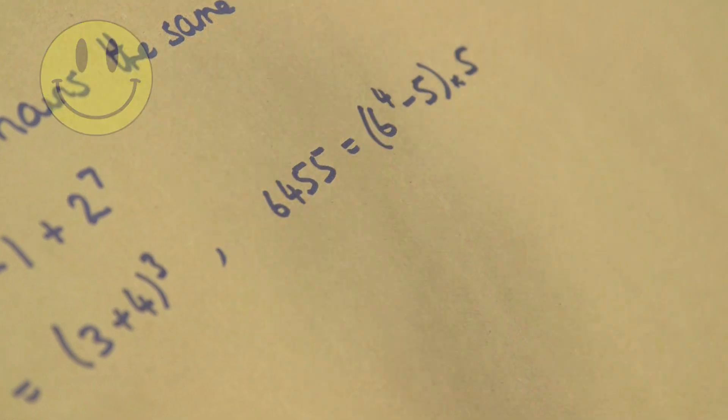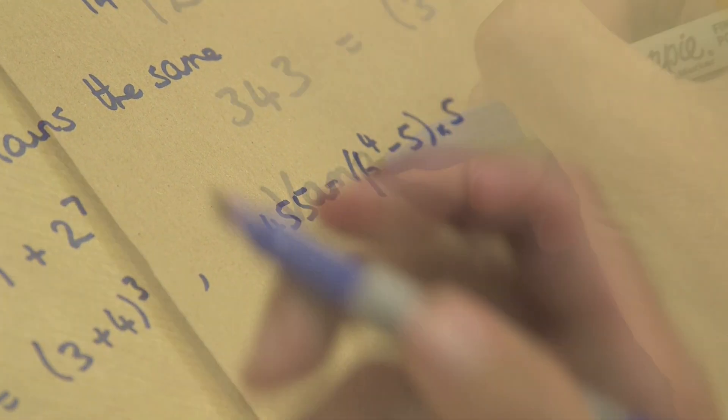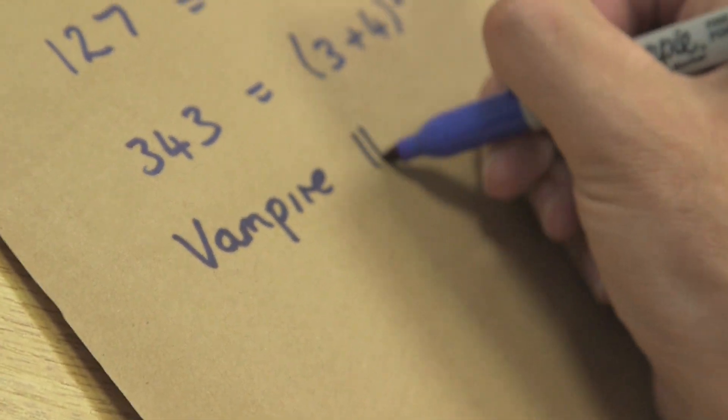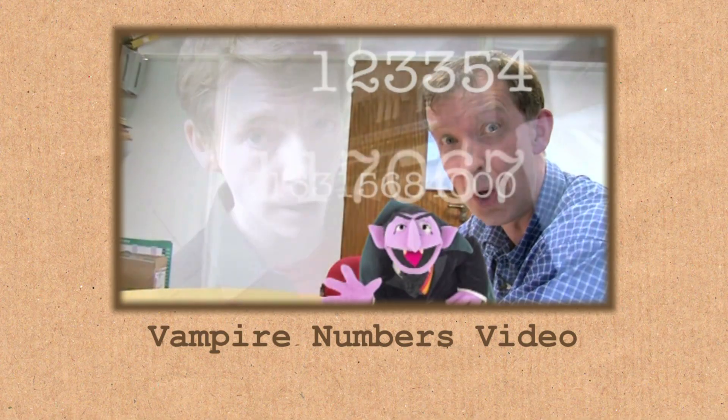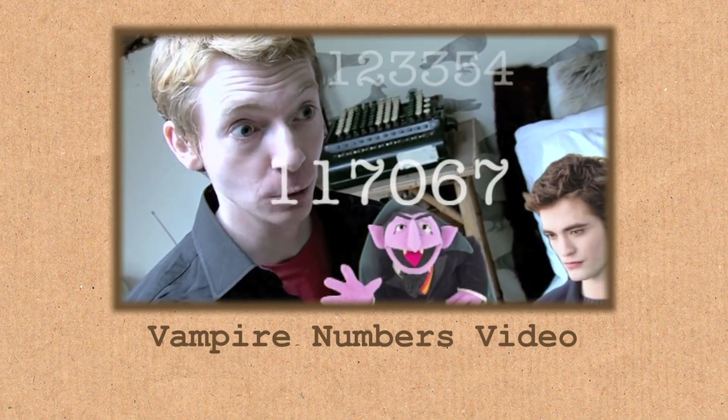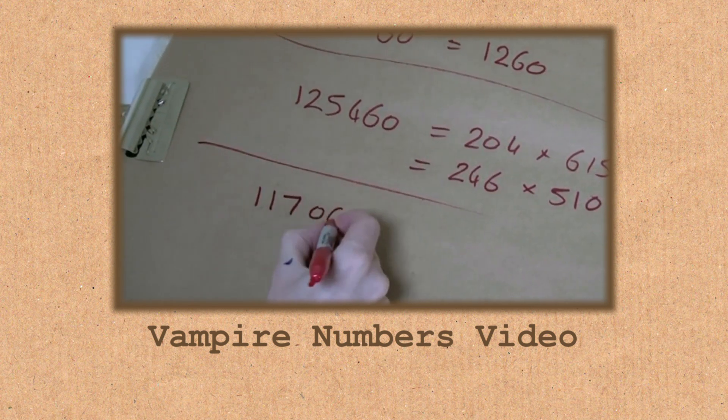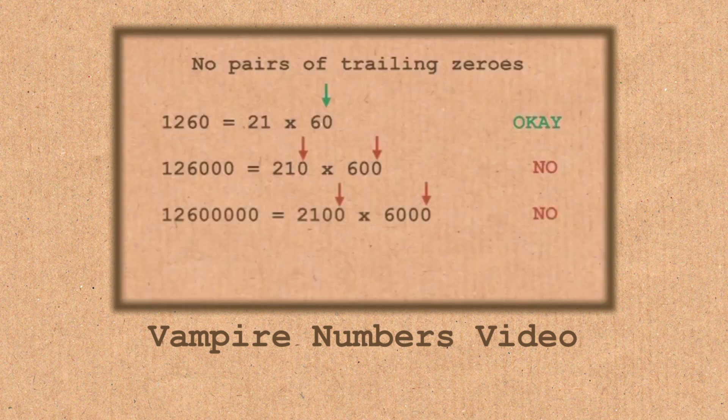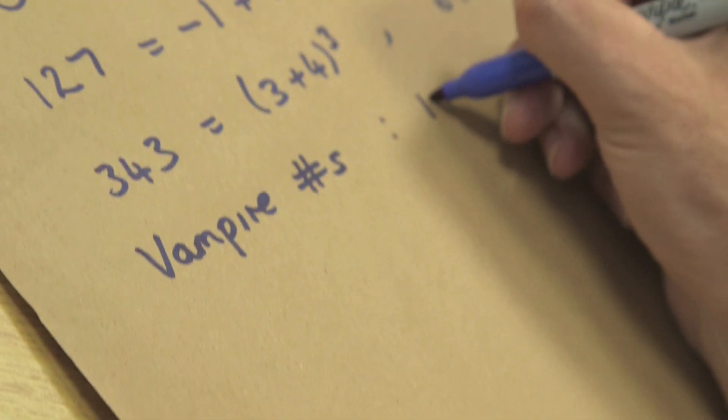So you get the idea that you can make up various combinations. And in fact, we've already come across a class of these, vampire numbers. So vampire numbers are made up of these where instead of using all the various combinations, we're just using the multiplications. So vampire numbers are an example.